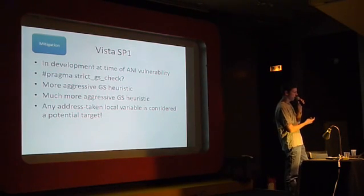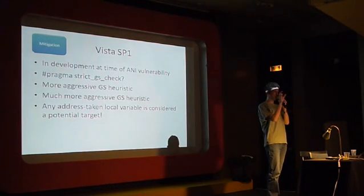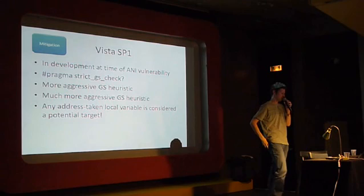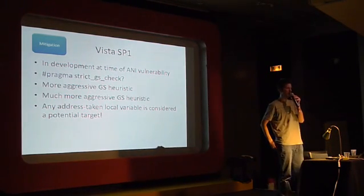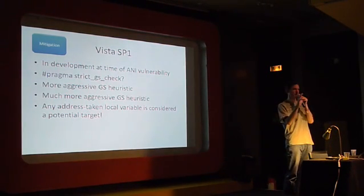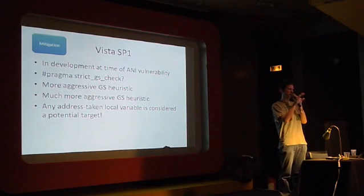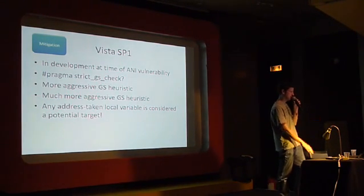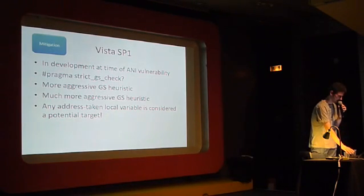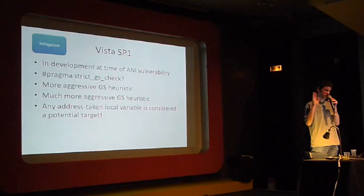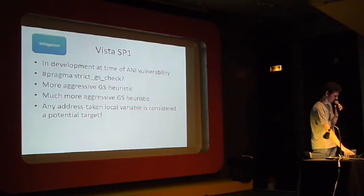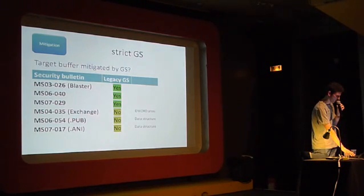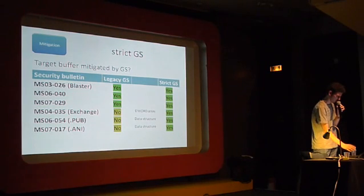I mentioned before a new pragma, strict_gs, that was introduced in Visual Studio 2005. What strict_gs does is tell the compiler to be much more aggressive in where it uses the GS mitigation — so any address taken on a local variable is considered a potential target. That would be good, because it would cover the cases we've just seen — all of those would have been covered by strict_gs.